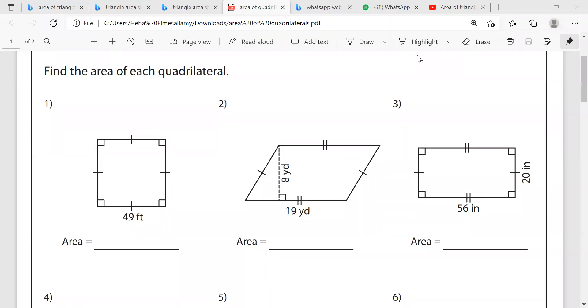Hello everyone. Today we are going to work this worksheet about the area of quadrilaterals. First of all, we have to remember that a quadrilateral is a polygon that is made of four sides.